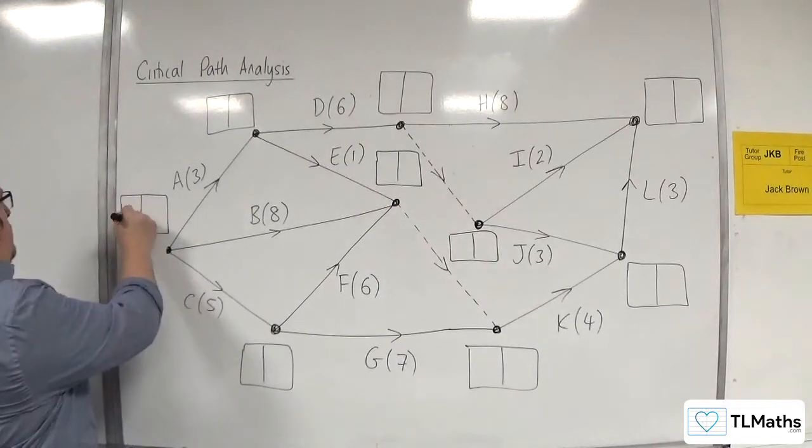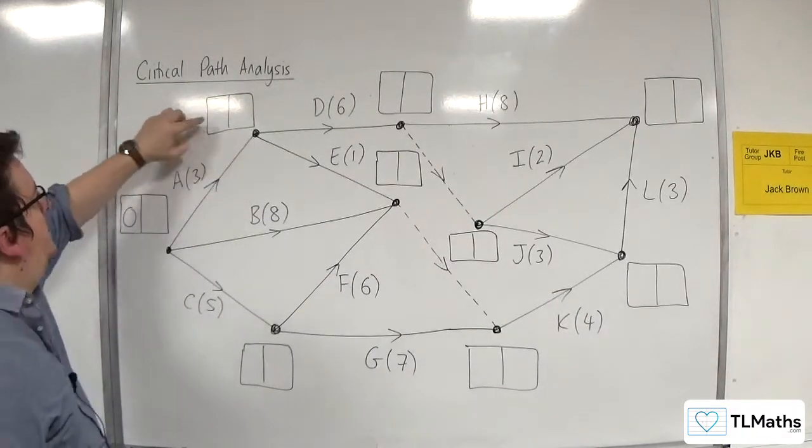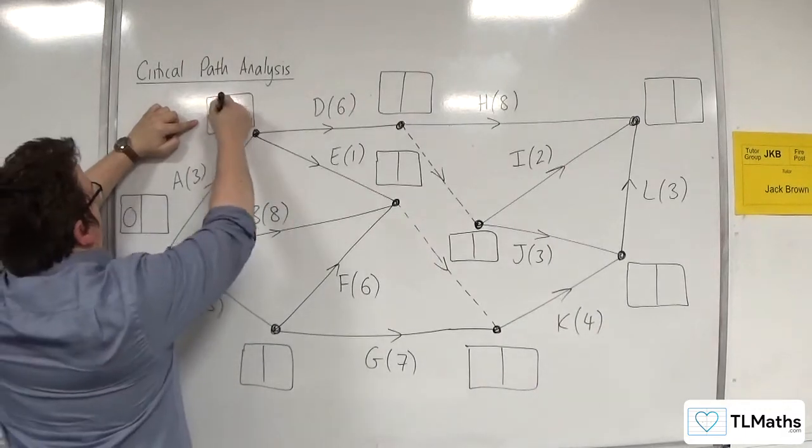So this would be 0 on the left-hand box. So there's only one route to that event, so that's through A, so that would go 3.